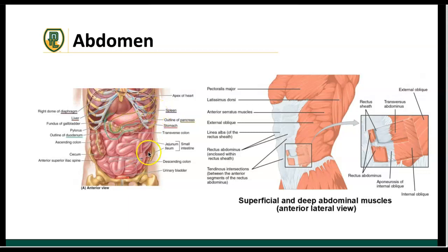In the lower left-hand quadrant, we have the descending colon and some small intestines. In the right lower quadrant, we have the appendix. Those are the four major internal organs by quadrant. The kidneys sit more posterior, protected by those floating ribs.